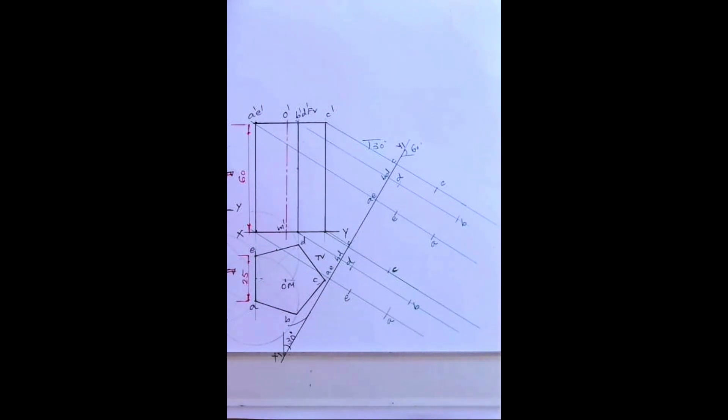Now we need to draw auxiliary view. We got all the points. Now observer will see from the top, right? It's the first angle sum.